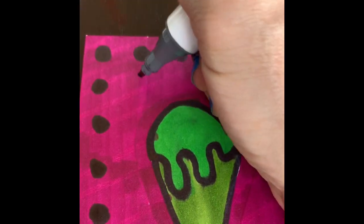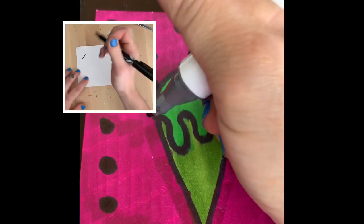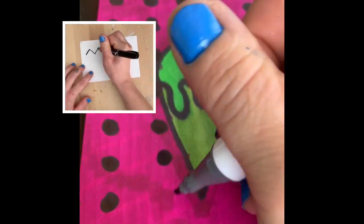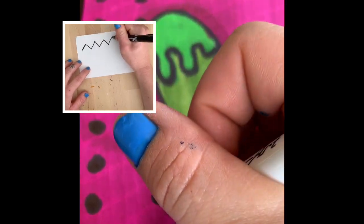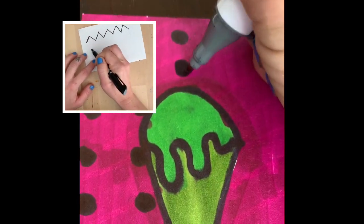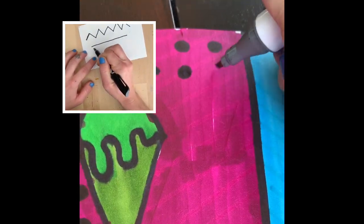When you're finished, in the background, you can add different details like polka dots or different types of lines like jagged lines or straight lines or swirly lines.